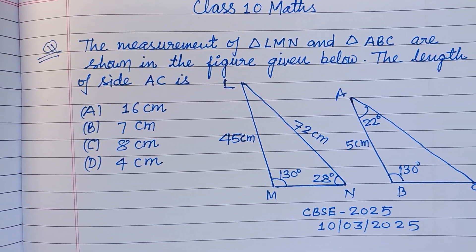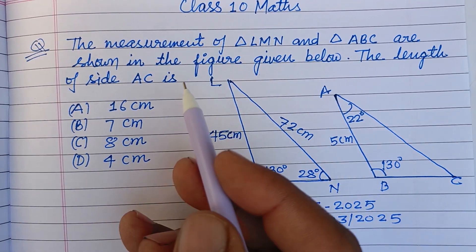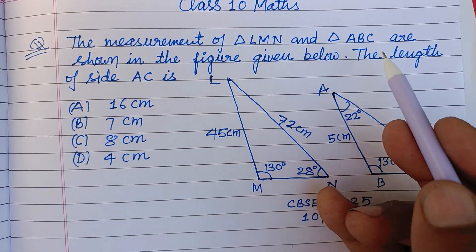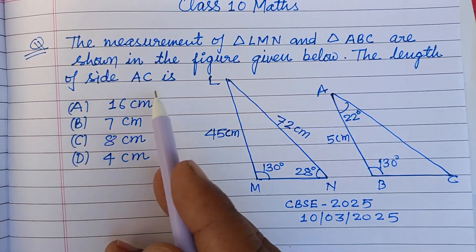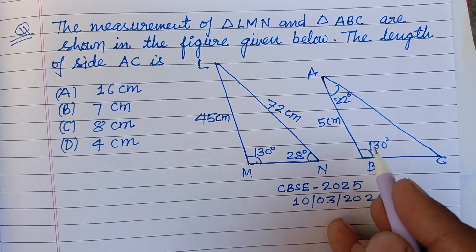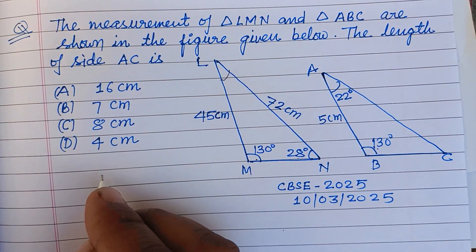Warm welcome to this YouTube channel. Question from CBSE Board Exam 2025: The measurement of triangle LMN and triangle ABC are shown in the figure given below. The length of side AC is to be found. Here is 130 degrees, this is also 130 degrees, and this is 28 degrees. We can find angle L.